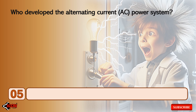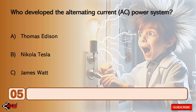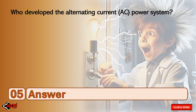Who developed the alternating current power system? Thomas Edison, Nikola Tesla, or James Watt? The correct answer is Nikola Tesla.